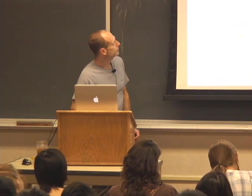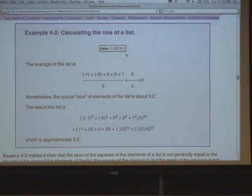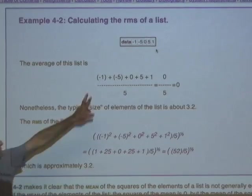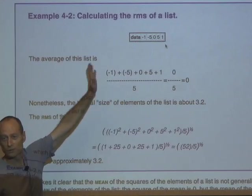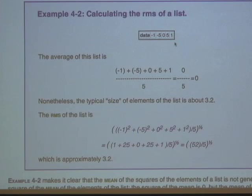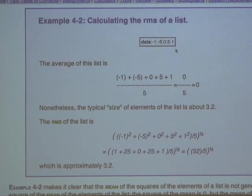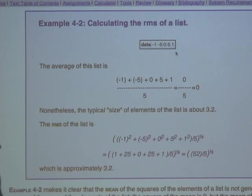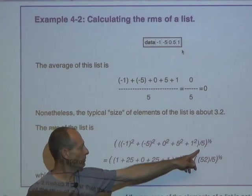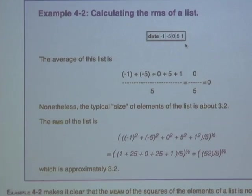Quick example: for the list minus 1, minus 5, 0, 5, 1 — the mean is obviously zero because the elements cancel. To find the RMS, we square each element, take the mean of those squares, then take the square root. That gives an RMS of 3.2 for this list.